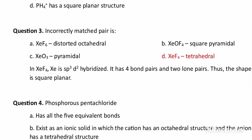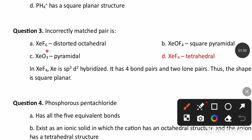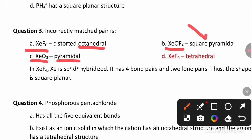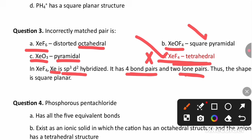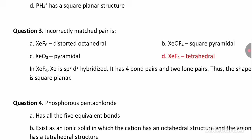The incorrectly matched pair question: XeF6 is octahedral, XeOF4 is square pyramidal, XeO3 is pyramidal. However, XeF4 is not tetrahedral — that is the incorrectly matched pair. In XeF4, xenon shows SP3D2 hybridization with four bond pairs and two lone pairs, so the geometry is square planar, not tetrahedral.